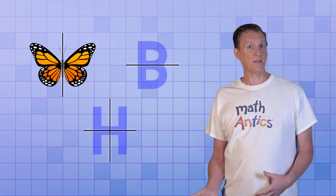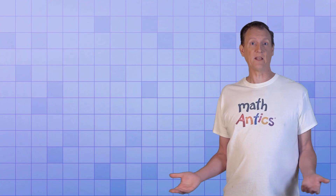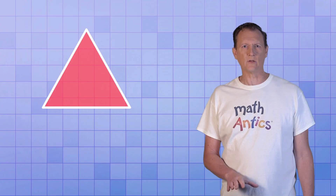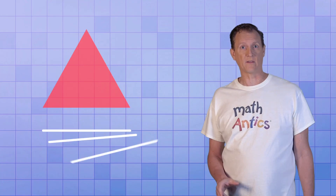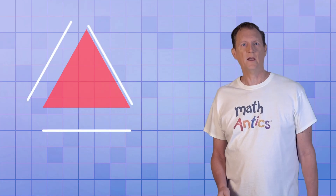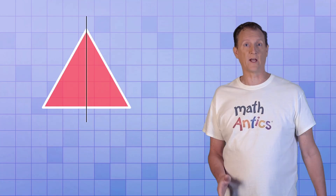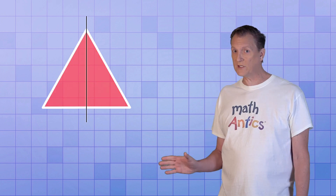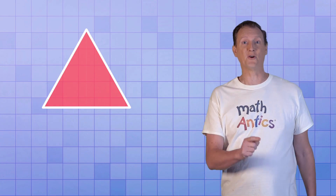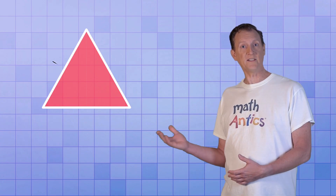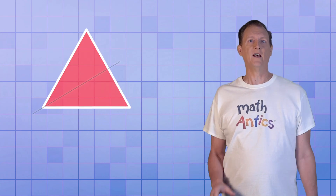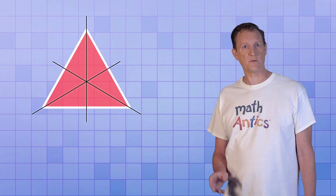But lines of symmetry don't have to be just vertical or horizontal — they can be at any angle. Take this equilateral triangle for example. An equilateral triangle has sides that are all the same length. You can probably see that it has a vertical line of symmetry, but is that the only one? If we fold it along this line, the two halves match. And if we fold it along this other line, the two halves also match. So this equilateral triangle has three lines of symmetry.